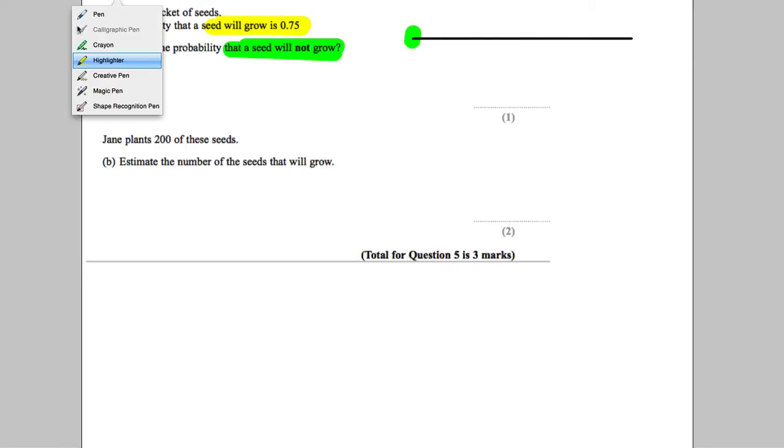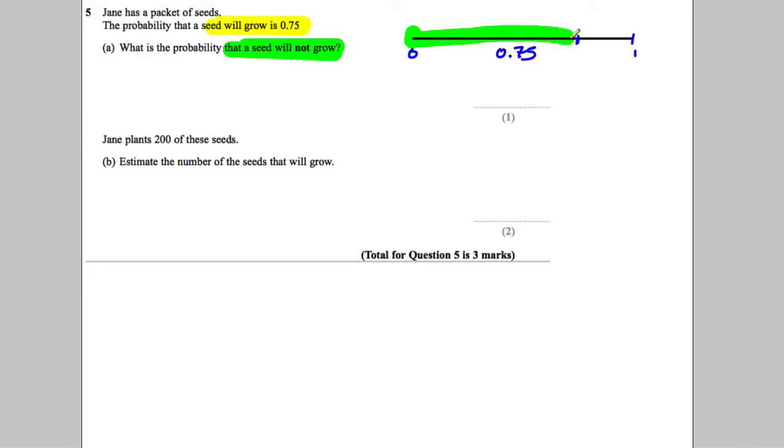Here being 1 and this being 0. If you know the probability that the seed will grow is 0.75, so all of this amount of the whole probability that's available is for the probability that the seed will grow. The question is, what's the probability that it will not grow? Well, what makes it up to 1? 0.25.